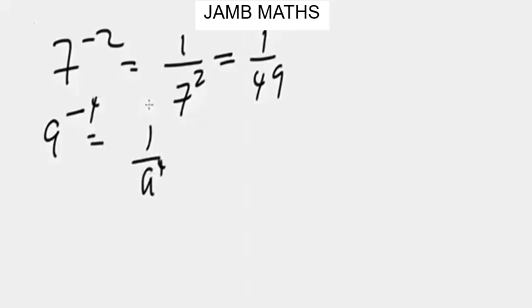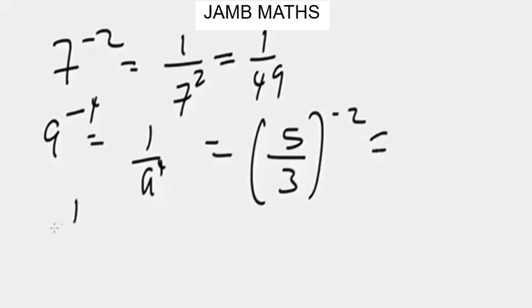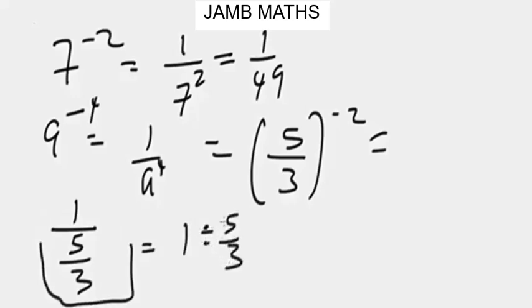Let's look at another problem. Let's say we have something like five over three in brackets, and we have negative two as the power. To simplify this problem, firstly this equals one over five over three. Another way you can express this is one divided by five over three. When you have division like this, if you want to change the division sign to multiplication, you're going to invert what you have here.